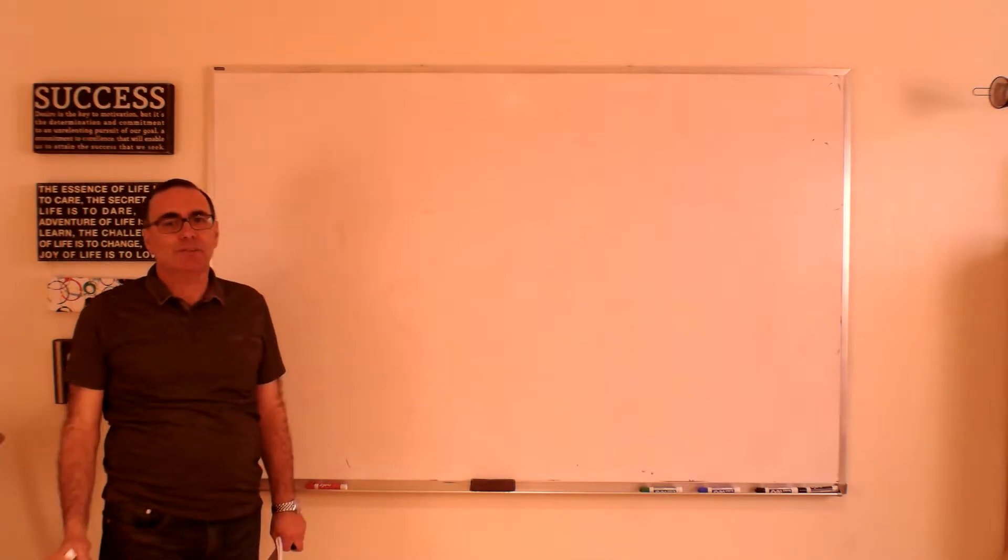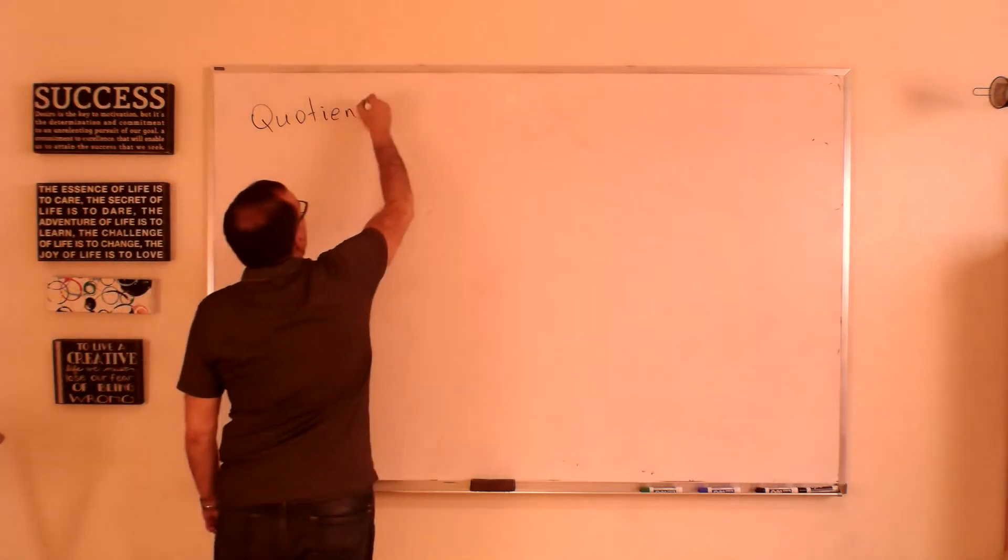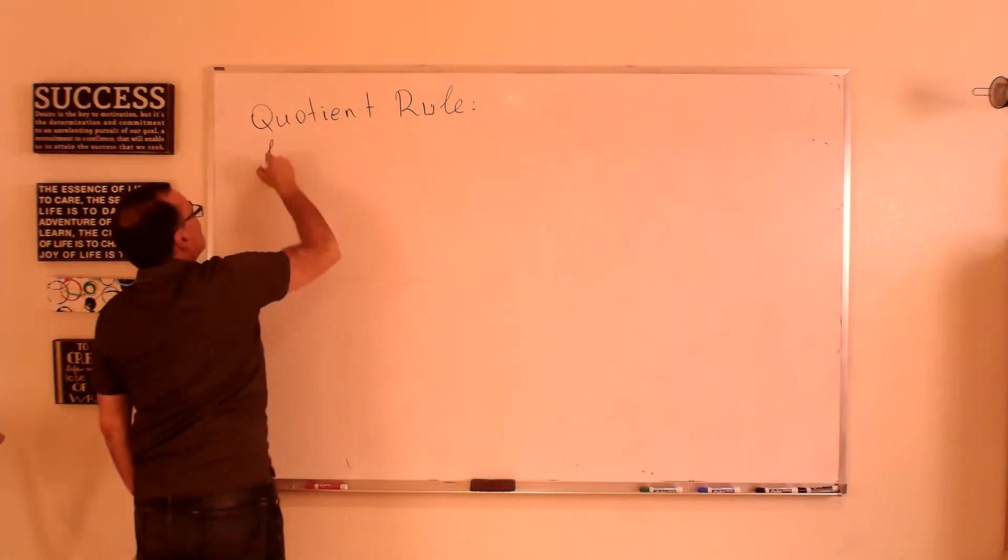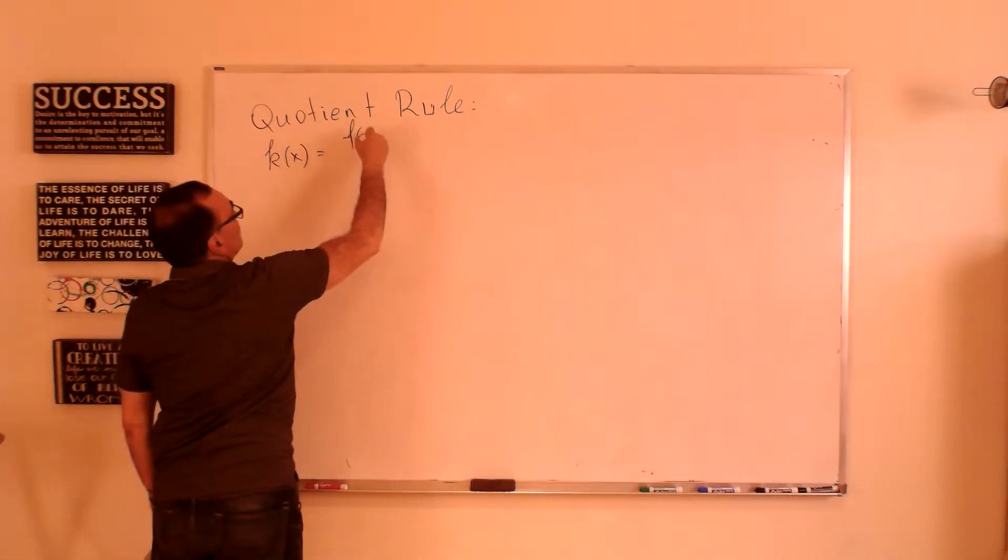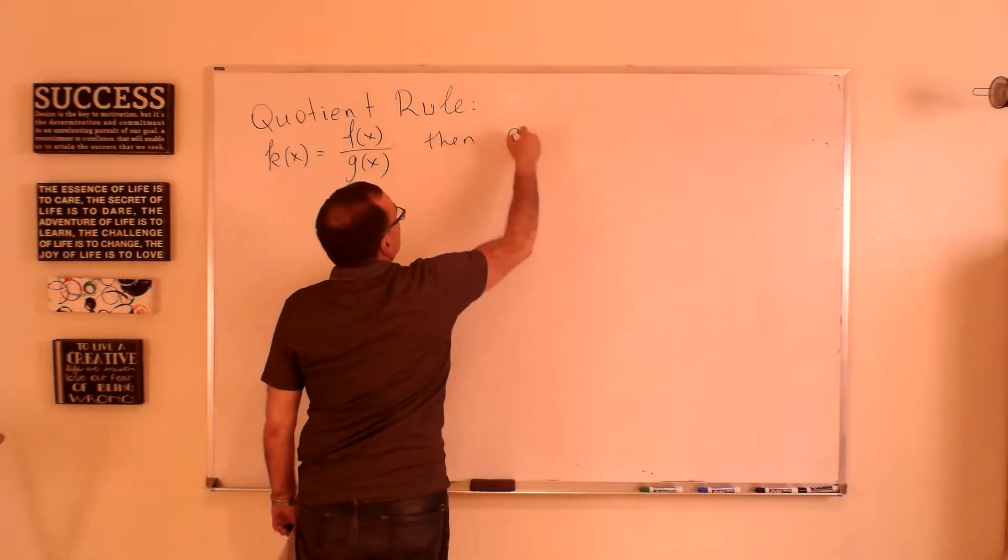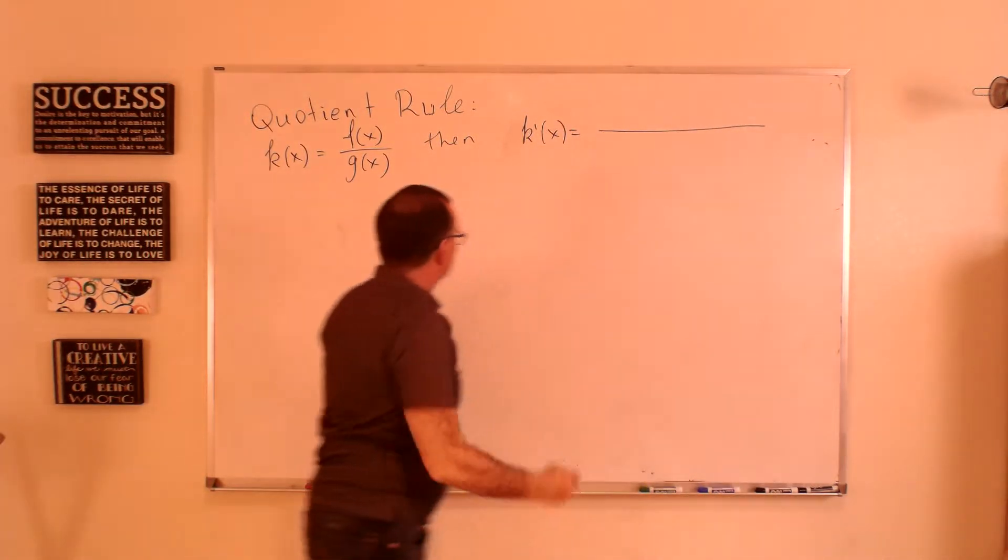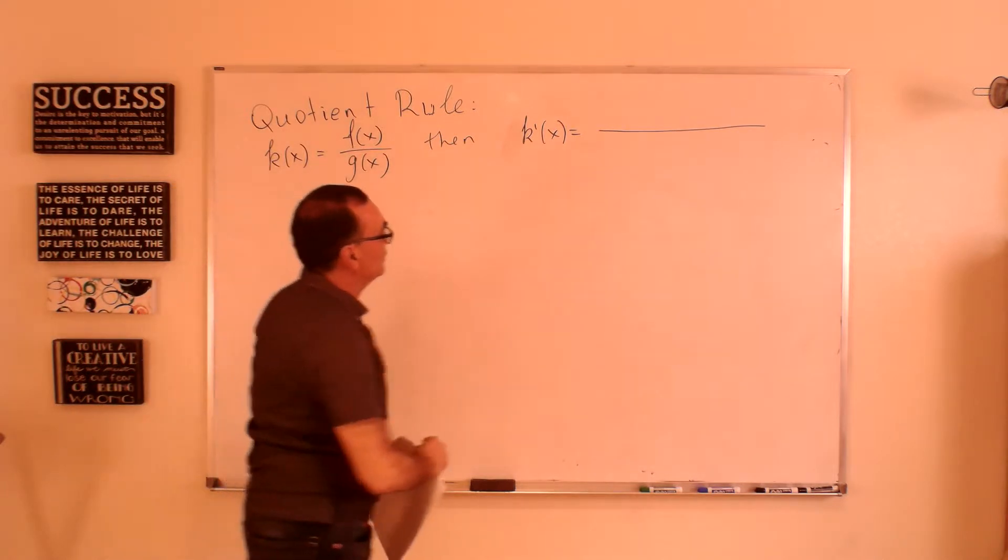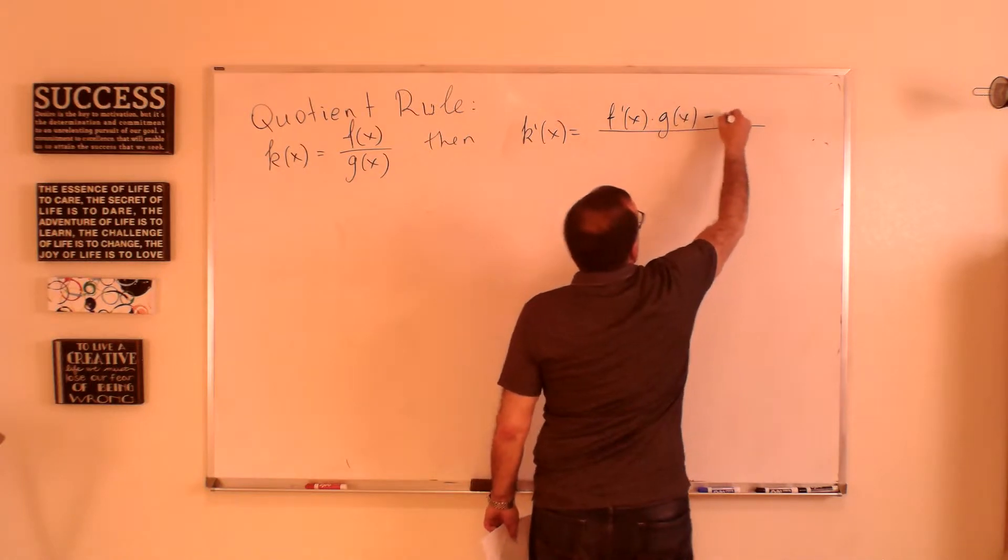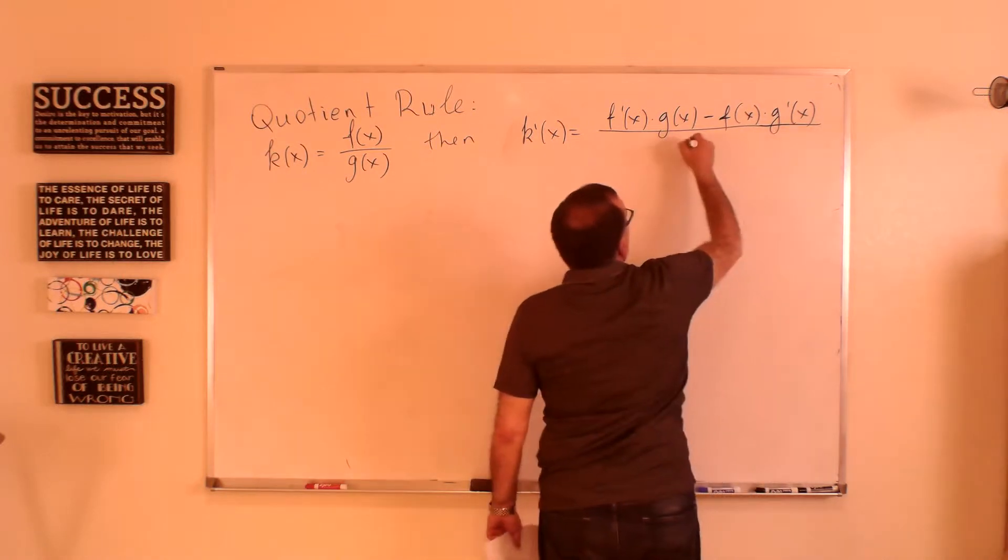Here are some examples of how to apply the quotient rule. Once again, the quotient rule says that if a function k(x) is a quotient or ratio of two other functions, then the derivative of this function is, once again, it's never the ratio of derivatives of these two functions, but rather it's f' times g minus f times g', all of that divided by g squared.